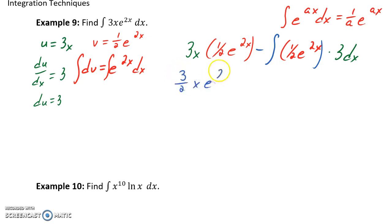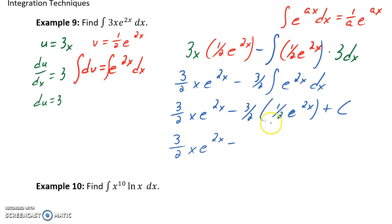We could clean this up a little bit. This would be 3 halves x e to the 2x minus 3 halves times the integral of e to the 2x dx. And then we could integrate e to the 2x using this formula that we just established again, so we would integrate e to the 2x as 1 over 2, or 1 half e to the 2x, plus some constant c. And then cleaning up this middle term, we can take 3 halves times 1 half to get 3 fourths e to the 2x plus some constant c.